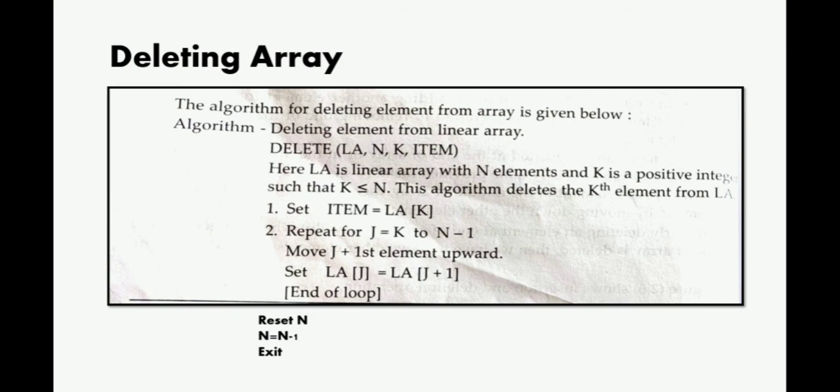In that case, you have to go till LA[J] equals LA[J+1], until it moves completely upward. You have to keep running this loop. Once this is done, then you do N equals N minus 1. What happens after this? After the element moves to the upward side, you remove it by doing minus 1. Minus 1 means the pointer will move away from there and your element will be deleted. And then exit.